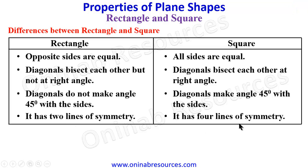And lastly, a rectangle has two lines of symmetry while a square has four lines of symmetry. So these are the differences between rectangle and square, and that brings us to the end of this tutorial. I hope you enjoyed it — please like and share this video. Until we come your way again, goodbye.